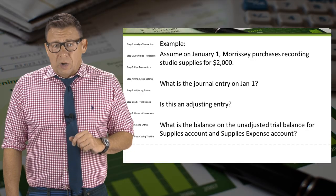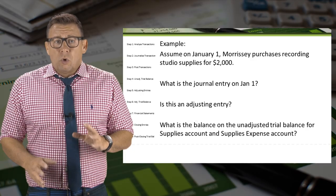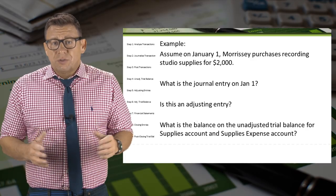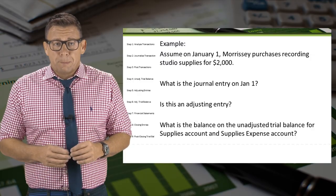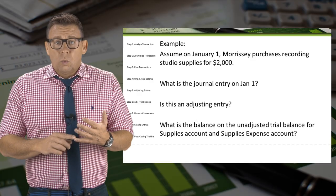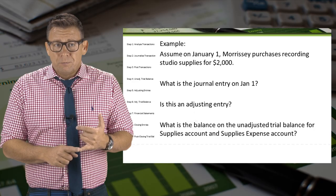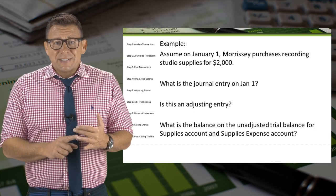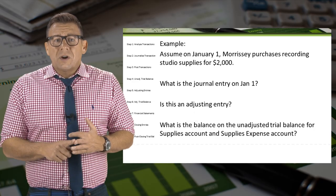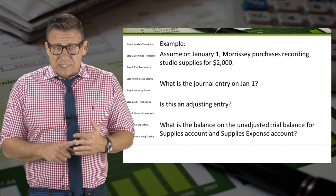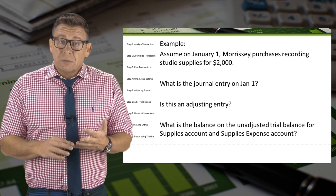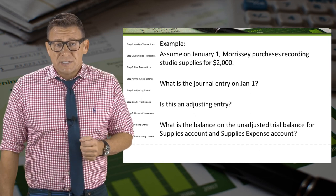Assume on January 1, Morrissey purchases recording studio supplies for $2,000. Let's answer the following questions: What is the journal entry on January 1? Is this an adjusting journal entry? What are the balances on the unadjusted trial balance for supplies and supplies expense?